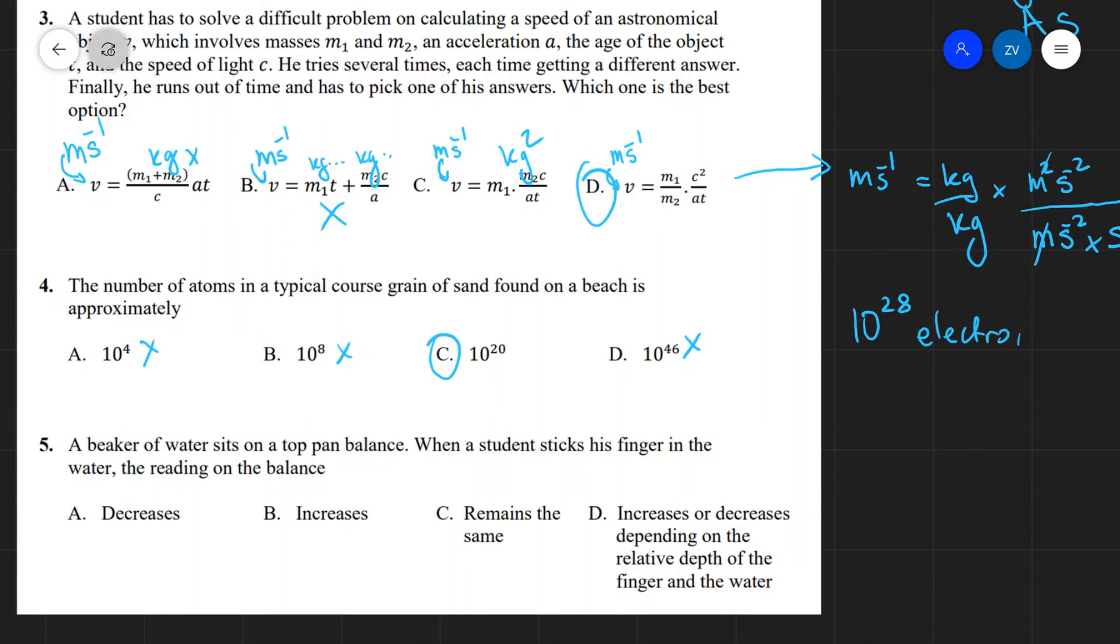So you're made of about 10 to the power of 28 electrons. So a grain of sand is going to have a smaller number of atoms compared to a human body. So 10 to the 20 will have to be the correct answer. This is just a useful number to keep in your head.